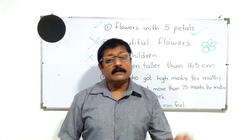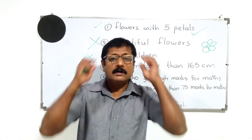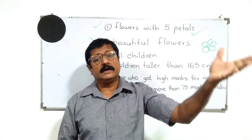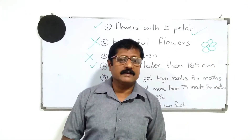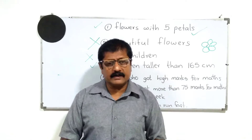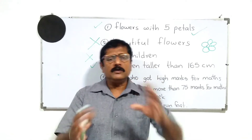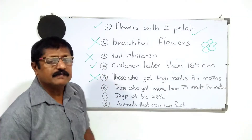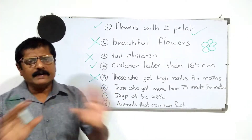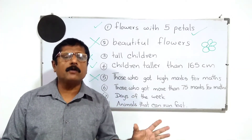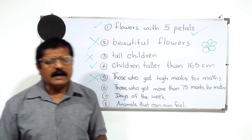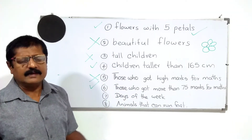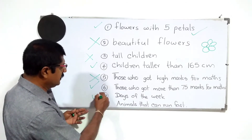What about 'those who got high marks'? One person will say 70 is a high mark; another says no, it must be above 80. You get different opinions — two people select different members, so it is not a set. But 'those who got more than 75' — whoever selects will choose the same group, so it is a set. 'Days of the week' — there are seven days, and anybody selects the same seven. That is also a set.